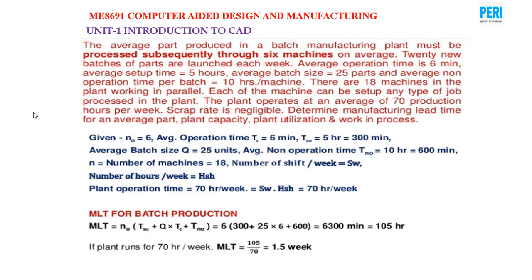Problem 2: Parts produced in a batch manufacturing plant must be processed through 6 machines. On average, 20 new batches of parts are launched per week. Average operation time is 6 minutes, average setup time is 5 hours, average batch size is 25 parts, average non-operation time per batch is 10 hours per machine. There are 18 machines in the plant. The plant operates 70 production hours per week. Scrap rate is negligible. Determine manufacturing lead time, plant capacity, plant utilization, and work in progress.